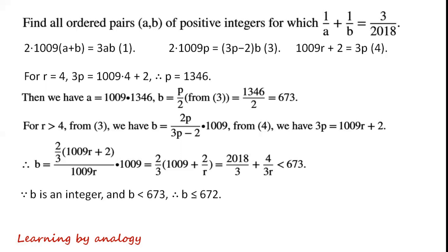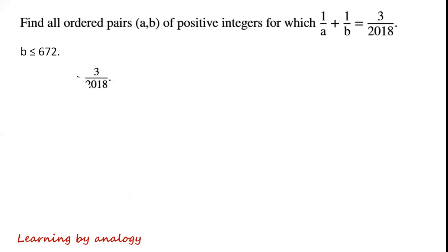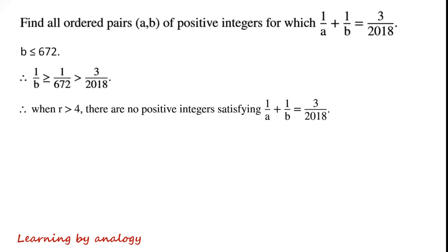So B ≤ 672. By rearranging this inequality, 1/B ≥ 1/672, which is greater than 3/2018. So when r > 4, there are no positive integers satisfying 1/A + 1/B = 3/2018.